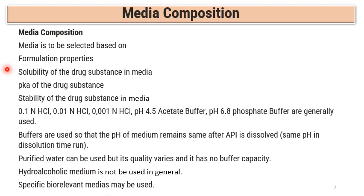The API should be stable in the media throughout the entire dissolution run — for example, 60 minutes for an IR formulation — while the release is studied by UV or HPLC. The API should be both soluble and stable in the media. Generally, 0.1N HCl, 0.01N HCl in aqueous media are used, along with pH 4.5 acetate buffer and pH 6.8 buffer as dissolution media. Water can also be used, but since water quality varies and it has no buffer capacity, its use as dissolution media should generally be avoided. Buffers are preferred as they maintain the pH of the media even after the API is added.